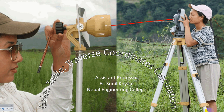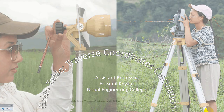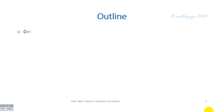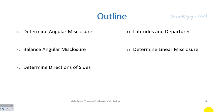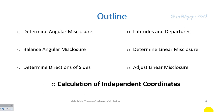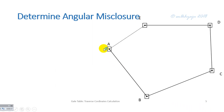Welcome to this lecture. In this lecture I will go through Gale's table, that is the traverse coordinate calculation. I will cover angular misclosure balancing, adjustment of angular misclosure, determining direction of sites — that is the bearing of the traverse leg — latitude and departure, linear misclosure adjustment, and finally calculation of independent coordinates.